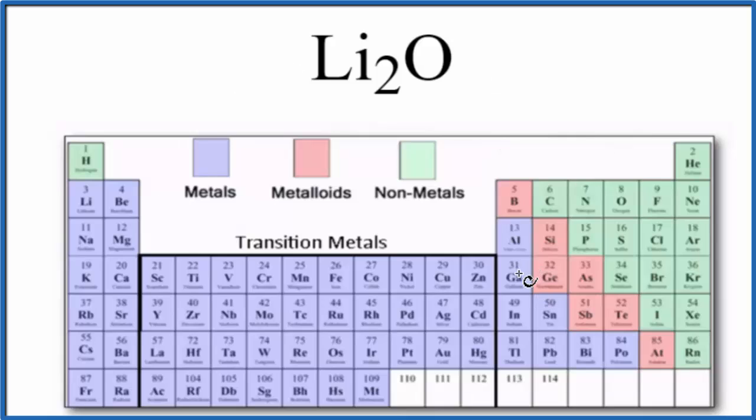Let's look at the periodic table here. We can see lithium right here. Lithium is a metal. Then oxygen over here. Oxygen, that's a non-metal. So when we have a metal and a non-metal, in general we have an ionic compound.